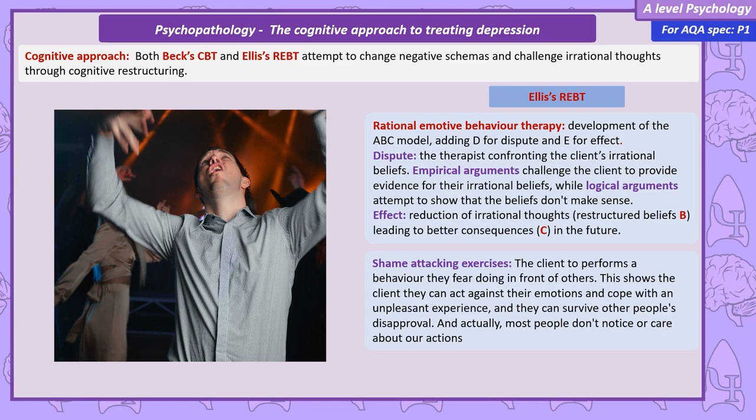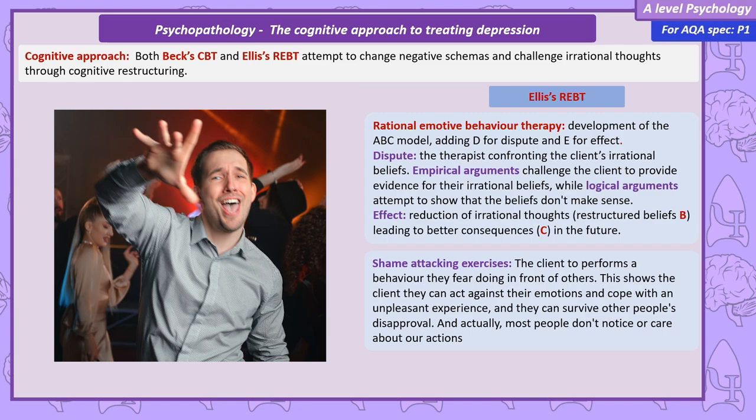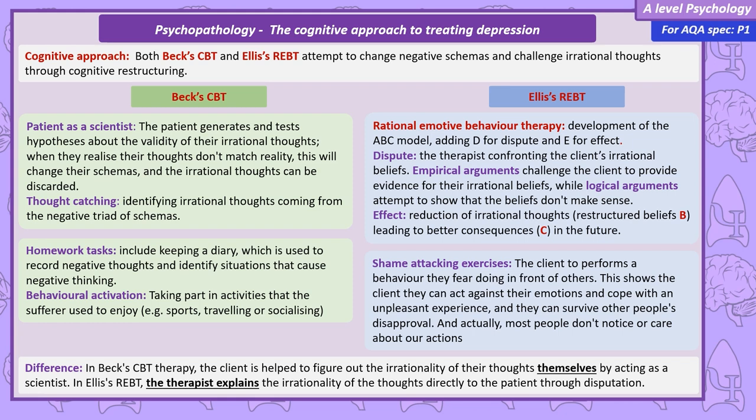These explanations may have made it seem that Beck's CBT and Ellis' REBT are very similar. And while they do have the same end goal — the cognitive restructuring of rational thoughts — how they get there is different. In Beck's therapy, the client is helped to figure out the irrationality of their thoughts themselves by acting as a scientist. While for Ellis, the therapist explains the irrationality of the thoughts directly to the patient through disputation.